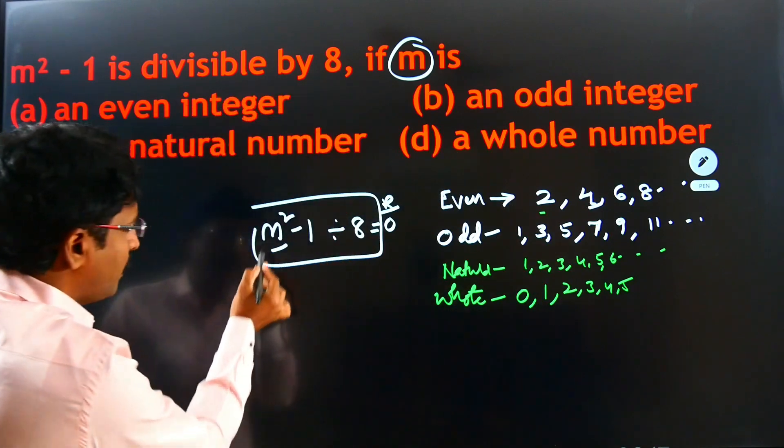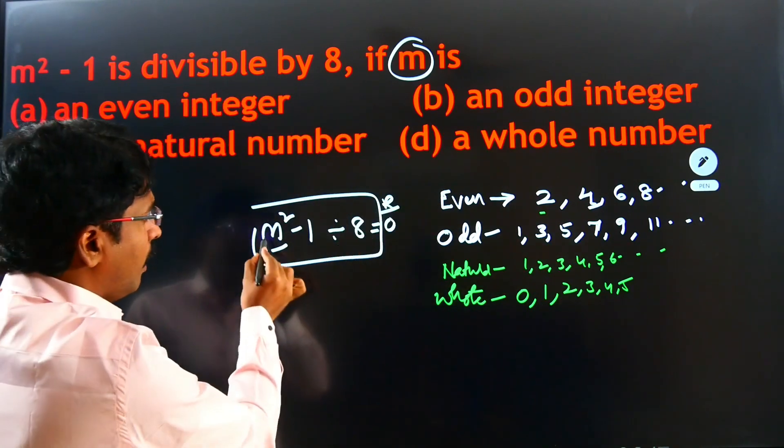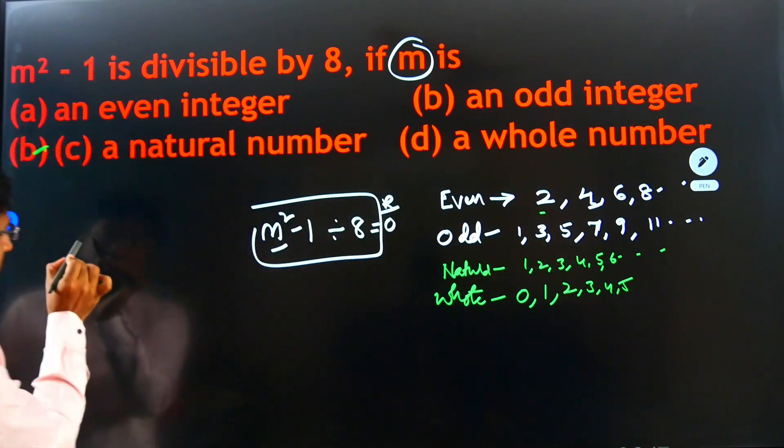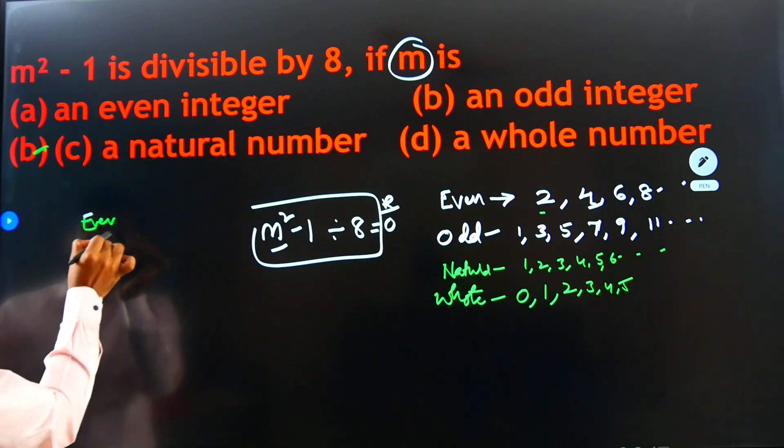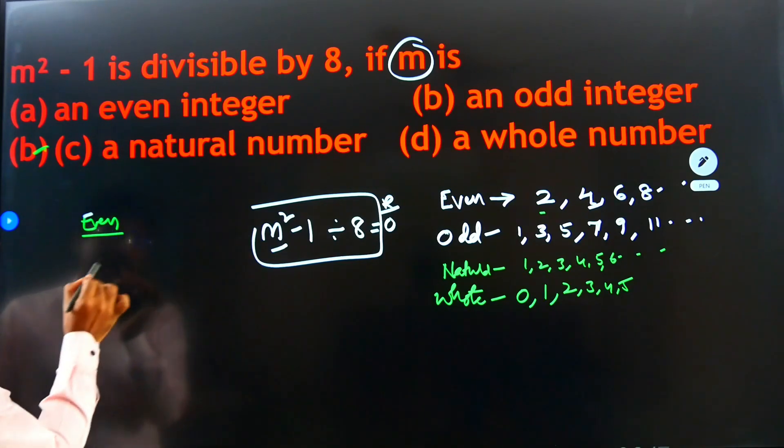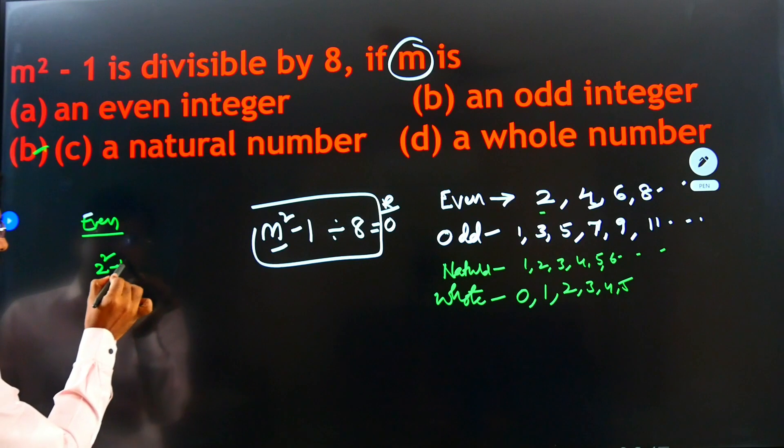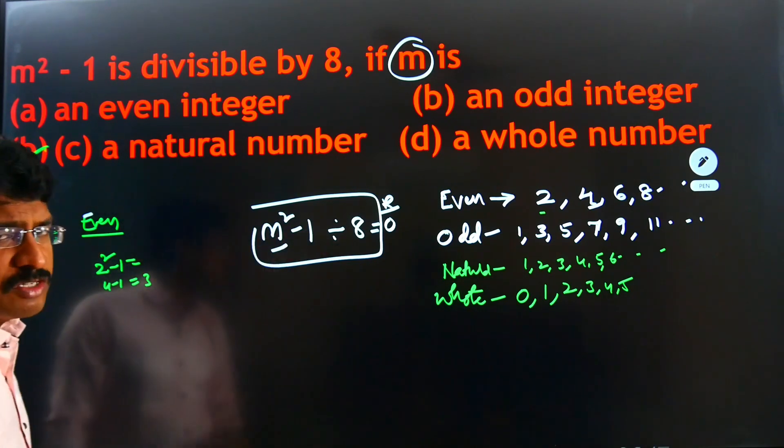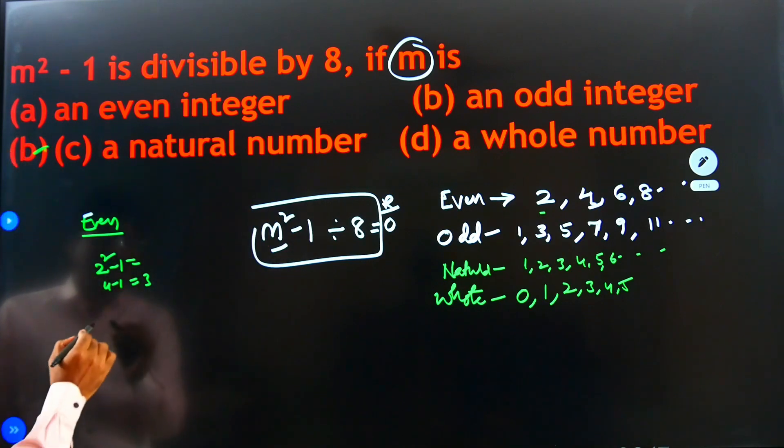Whether even number, for example, in place of M, if I keep the even number, what will happen? M means 2. Even number means 2 square minus 1. 2 square minus 1 means 4 minus 1, 3. 3 is not divisible by 8.